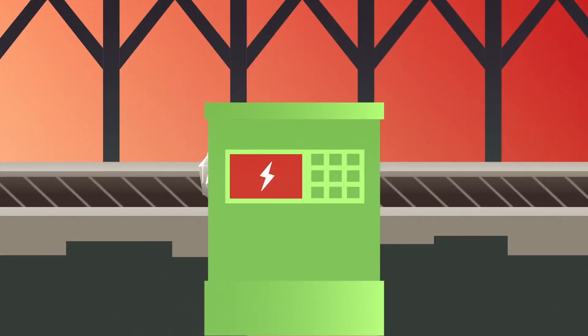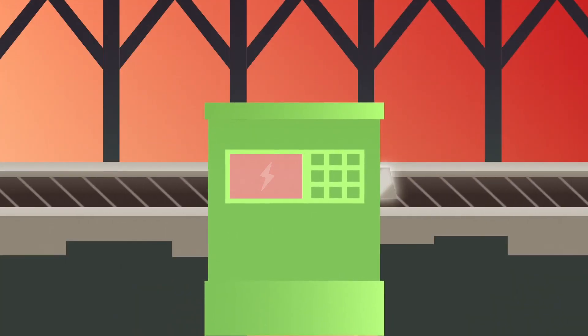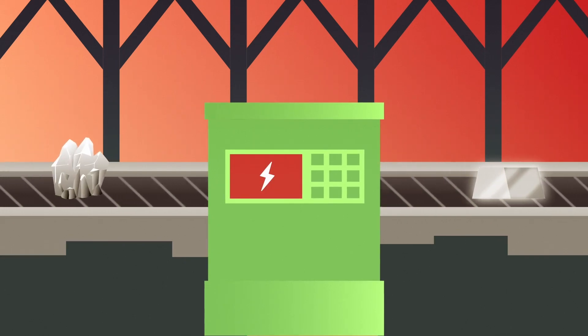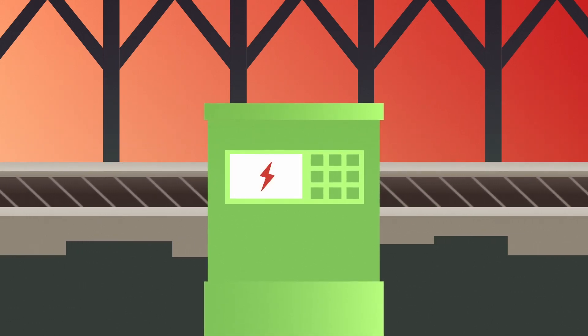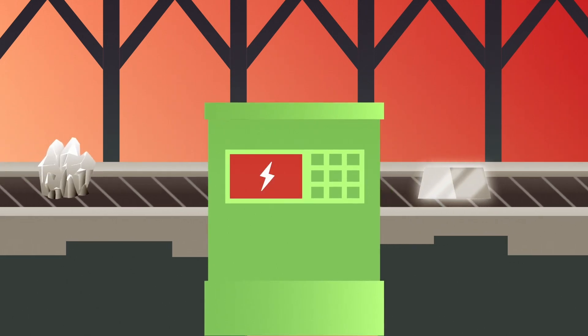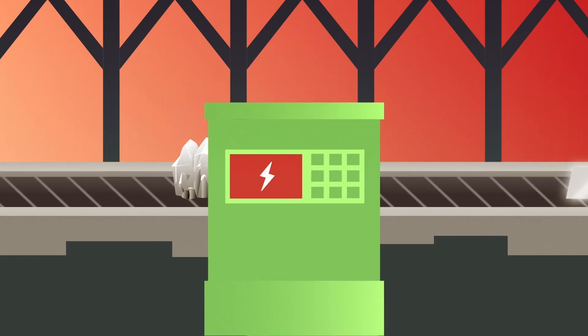Once Ytterbium ore has been mined, it is purified to remove other metals and then isotopically enriched to Ytterbium-176. This process is resource intensive and mainly carried out in Russia.